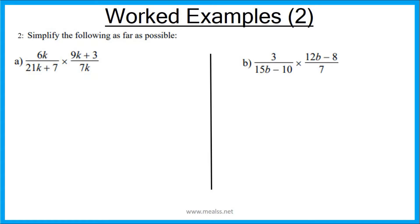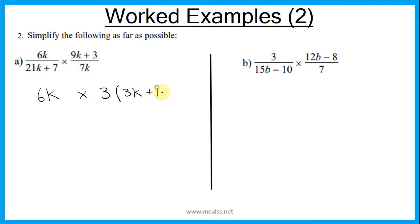These second worked examples are a lot trickier than the first ones, so you need to do something different: factorize where possible. Looking at the numerators only to start: 6k cannot be factorized, so that stays the same. 9k plus 3 can be factorized — the common factor of 9 and 3 is 3, so 3 goes outside the brackets. Inside the brackets: 3 times 3k gives 9k, and 3 times positive 1 gives positive 3.